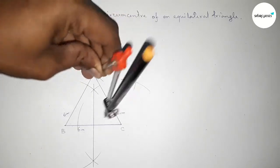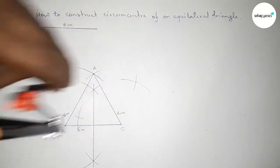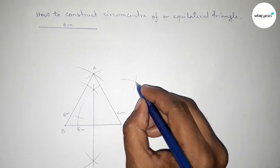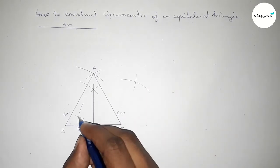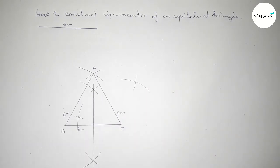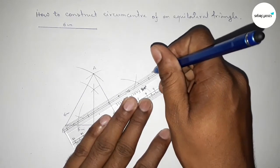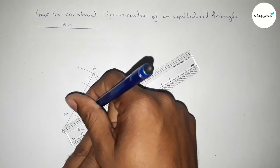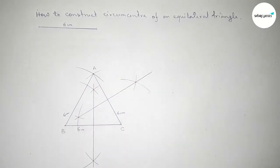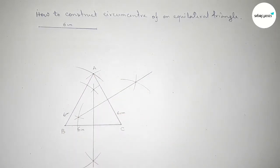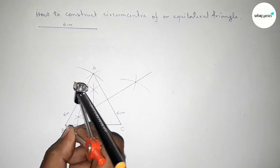Now bisecting the line AC. Taking greater than half of AC and drawing an arc, then with the same length cutting here so both curves intersect at two points. Now joining this bisector — the perpendicular bisector of AC.